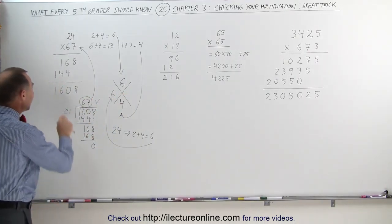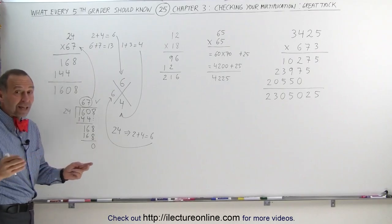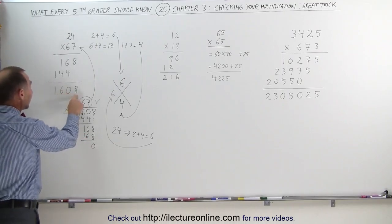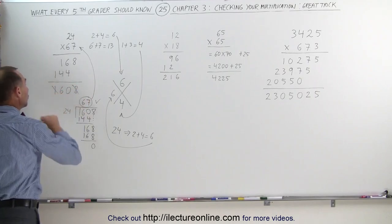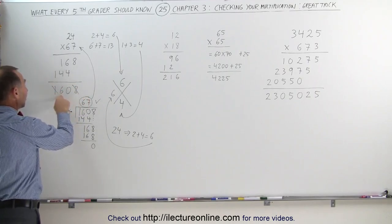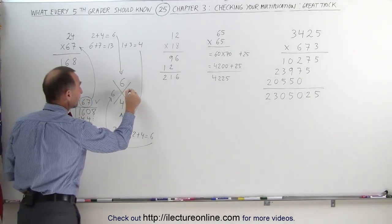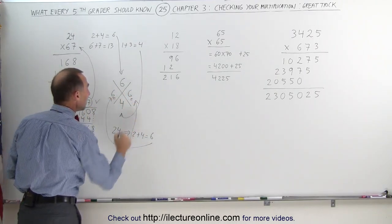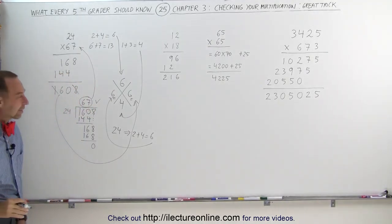Now one more trick, if any two numbers or any three numbers add up to 9, you can simply ignore them. For example, 1 plus 8 adds up to 9, so we've ignored those two numbers. All that's remaining is 6, and that number goes in here, so this 6 comes over here, and if these two numbers are the same, your multiplication is correct.